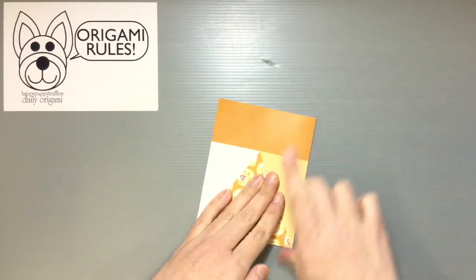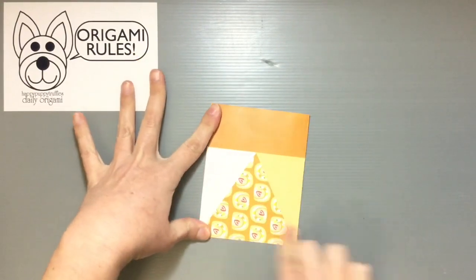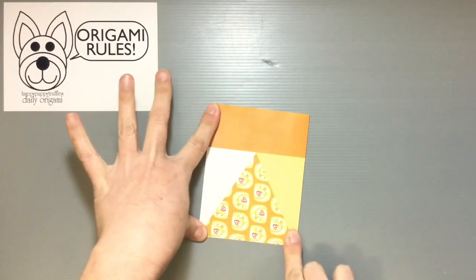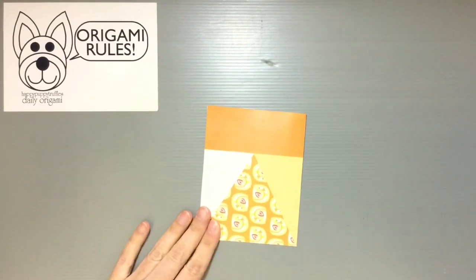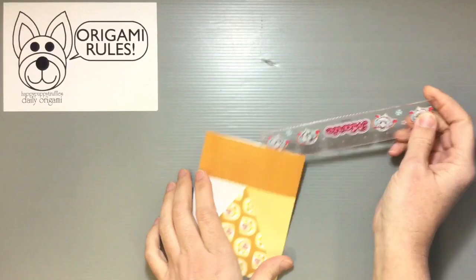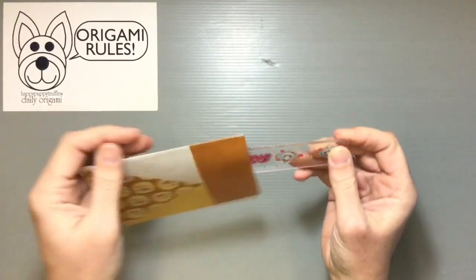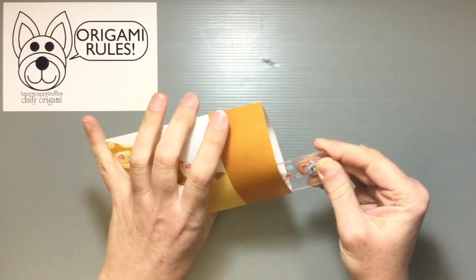Then you just want to make a nice little crease there. I like to have a ruler around so I can just kind of go in here and make sure that the edge is really clear for both of these sides.